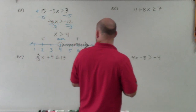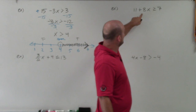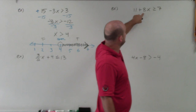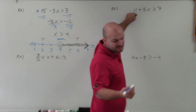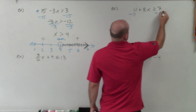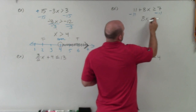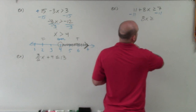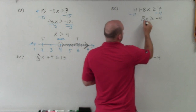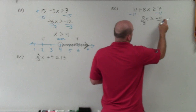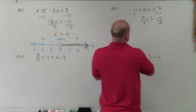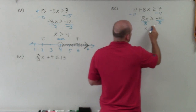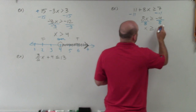So now let's get to the next one. Here's another example where my number is in front. I'm going to subtract 11 on both sides. Therefore, I'm left with 8x is greater than or equal to negative 4. Now I'm going to divide by 8. And I'm left with x is greater than or equal to negative one-half.